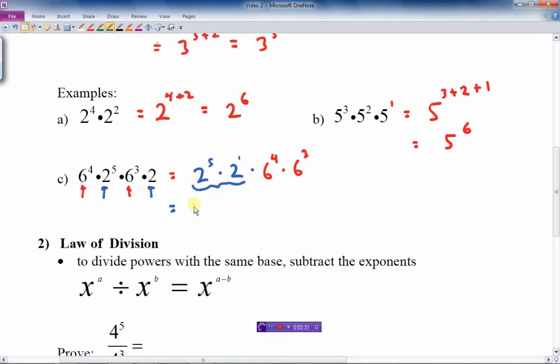There's 1, 2 there. So 5 plus 1 is 6. So this is 2 to the 6th times. What about the 6's there? Well, I add the exponents again. 6 to the 4 plus 3 is 7. And there's my answer. 2 to the 6 times 6 to the 7th power.